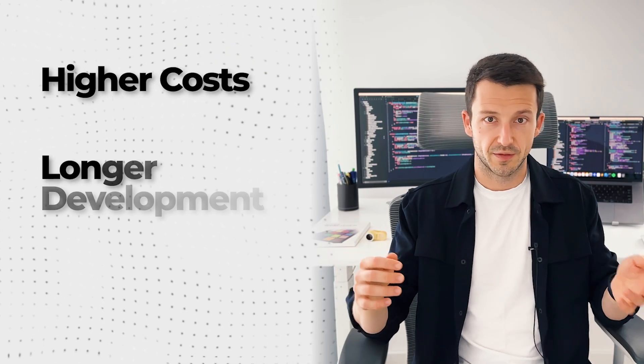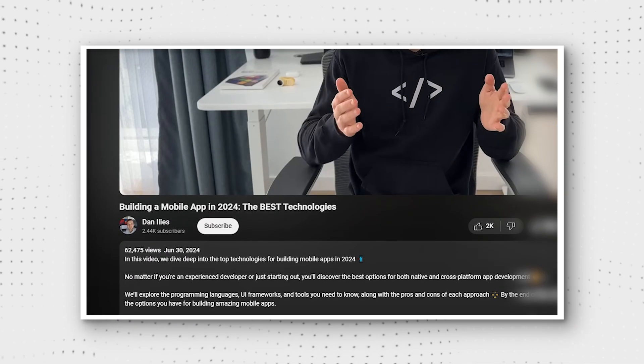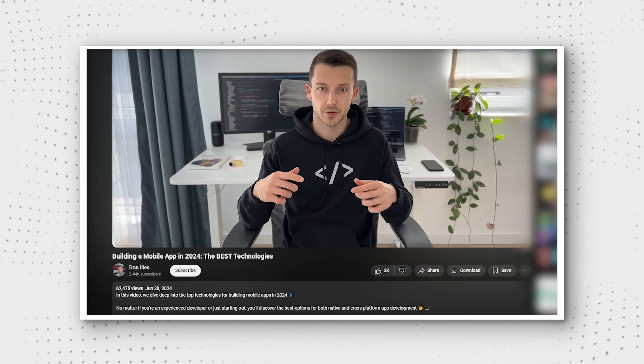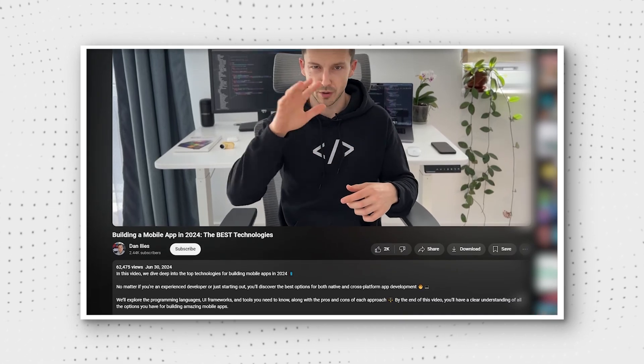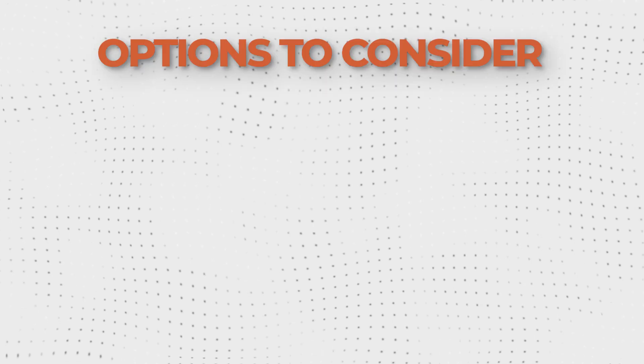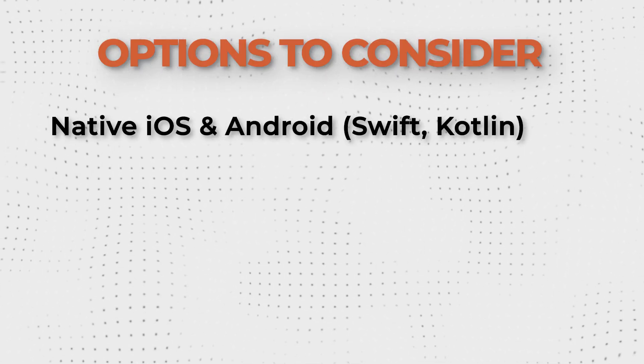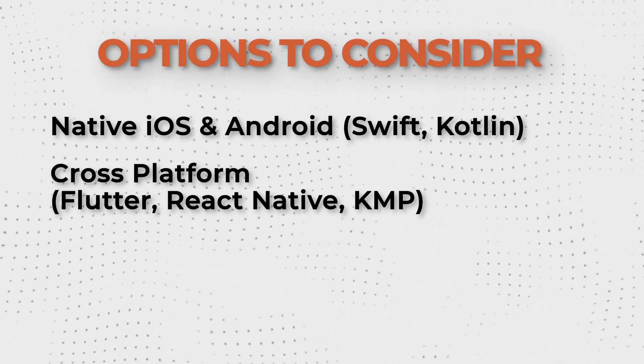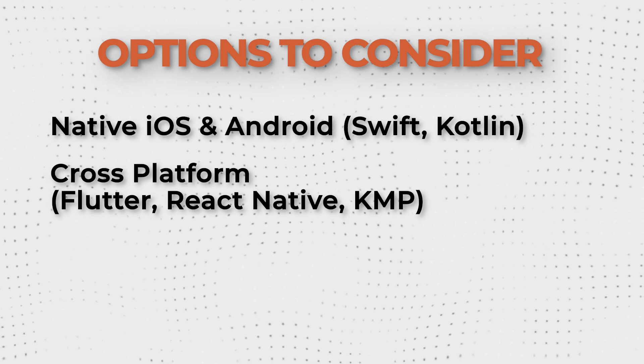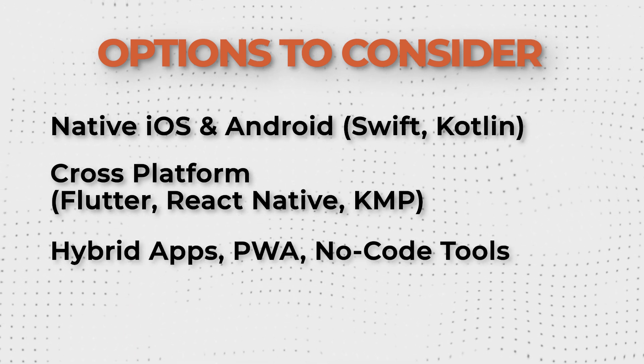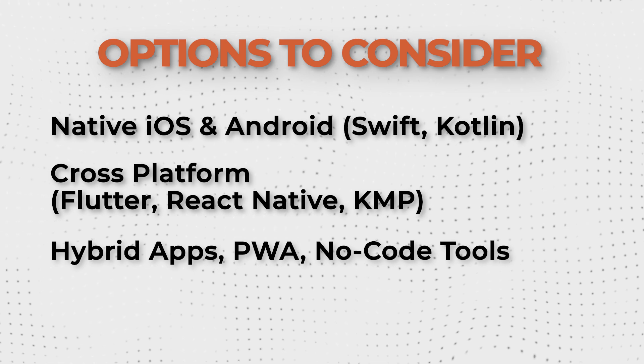With all these frameworks and tools, making a suboptimal choice for your app can lead to higher costs, longer development hours, or even poor performance. I made a full breakdown of the technologies you could use in another video, which also happens to be my most viewed video on the channel so far. You can check that out for a deeper technical dive, but today we're zooming out and looking at the bigger picture. As a short recap, your options are native iOS and Android apps separately, cross-platform apps made with Flutter, React Native or Kotlin Multiplatform, and hybrid apps, progressive web apps, or even no-code tools in some cases.